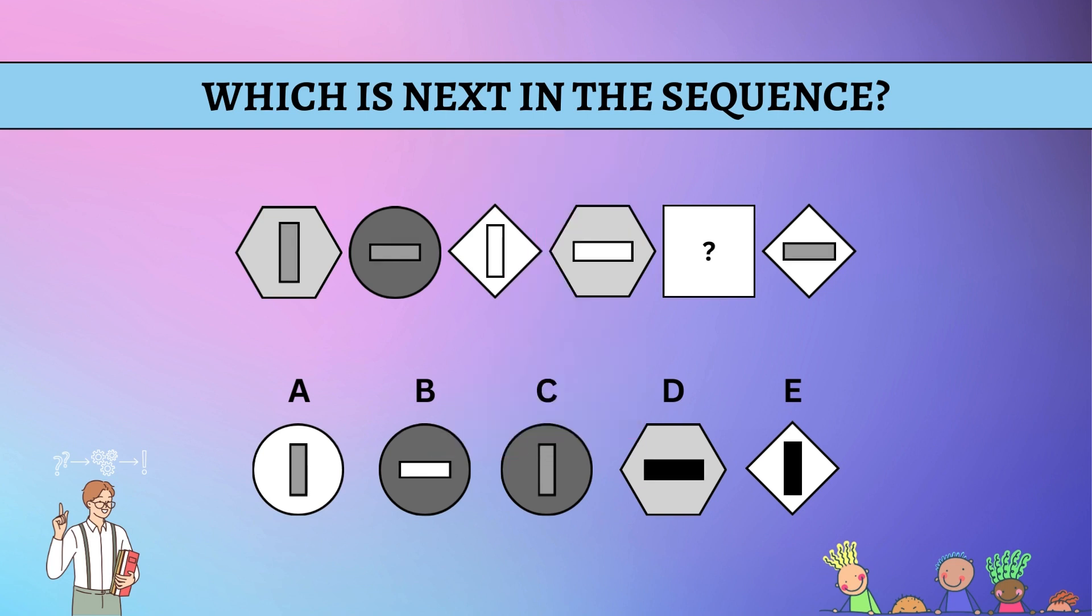All right, let's take a closer look at the sequence. We're going to tackle the inside rectangle first. We need to figure out whether it's going to be vertical or horizontal. Looking at the previous shapes, we see that there is indeed a pattern here: vertical, horizontal, vertical, horizontal, something, and then horizontal. That tells me that the missing inside rectangle must be vertical.